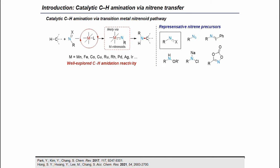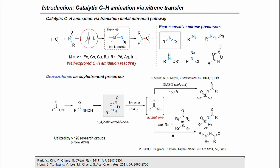Catalytic CH amination is a highly desirable process for accessing synthetically and pharmaceutically valuable amine products. In the Chang group, we are mainly investigating CH amination reactions using transition metal catalysts and various amine sources, mainly through the nitrinoid transfer pathway. There are many available aminoiodanes and hydroxylamine derivatives, and recently we have discovered the particular utility of dioxazolones as acyl nitrinoid precursors.